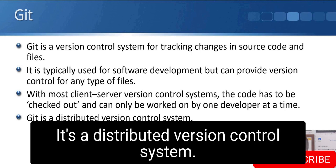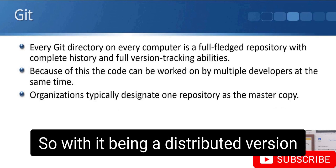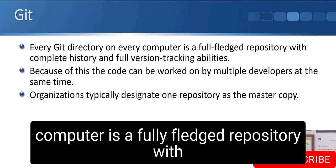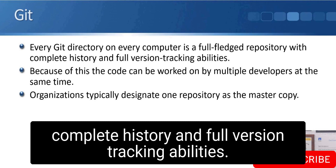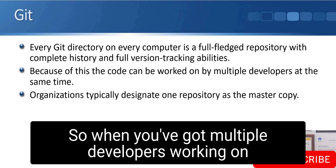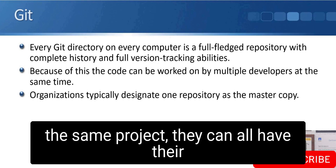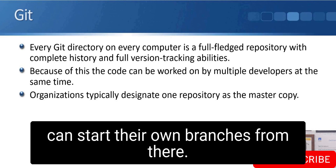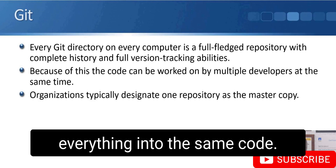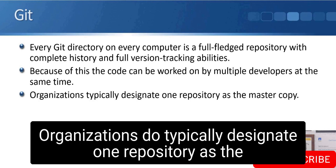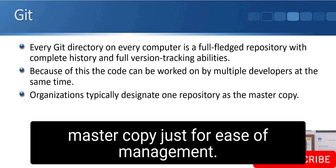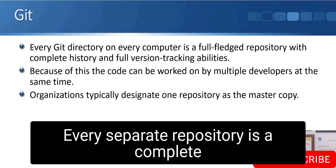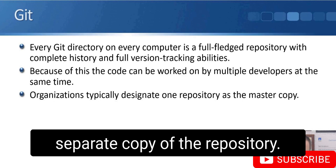Git is different — it's a distributed version control system. Every Git directory on every computer is a fully fledged repository with complete history and full version tracking abilities. When multiple developers are working on the same project, they can each have their own separate copy and start their own branches, and it's very easy to merge everything back together. Organizations typically designate one repository as the master copy for ease of management, but architecturally every repository is a complete, separate copy.